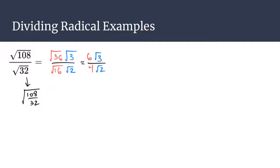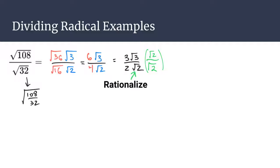You can see that on top you're going to have 6 times the square root of 3, over 4 times the square root of 2. You've simplified the top and the bottom completely, and now you can reduce the 6 over 4. So at this point you have 3 square root of 3 over 2 square root of 2. That's not quite final because you still have to rationalize the denominator. To do so, multiply by the square root of 2 on the top and bottom — you only need to rationalize the part with the radical, not the 2 out front. On top you get 3 times the square root of 6, and on the bottom 2 times 2, giving a final answer of 3 times the square root of 6 all over 4.